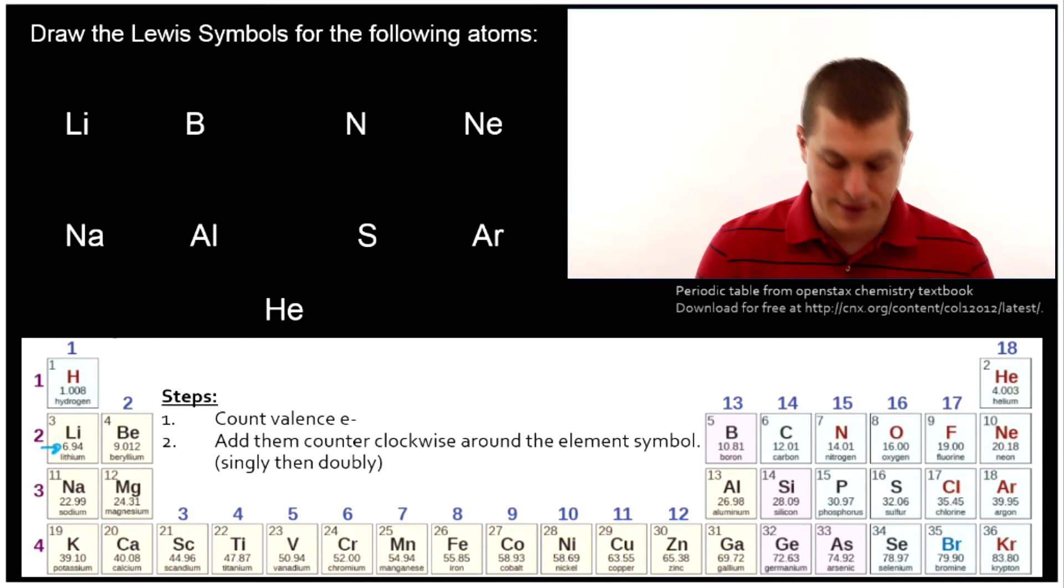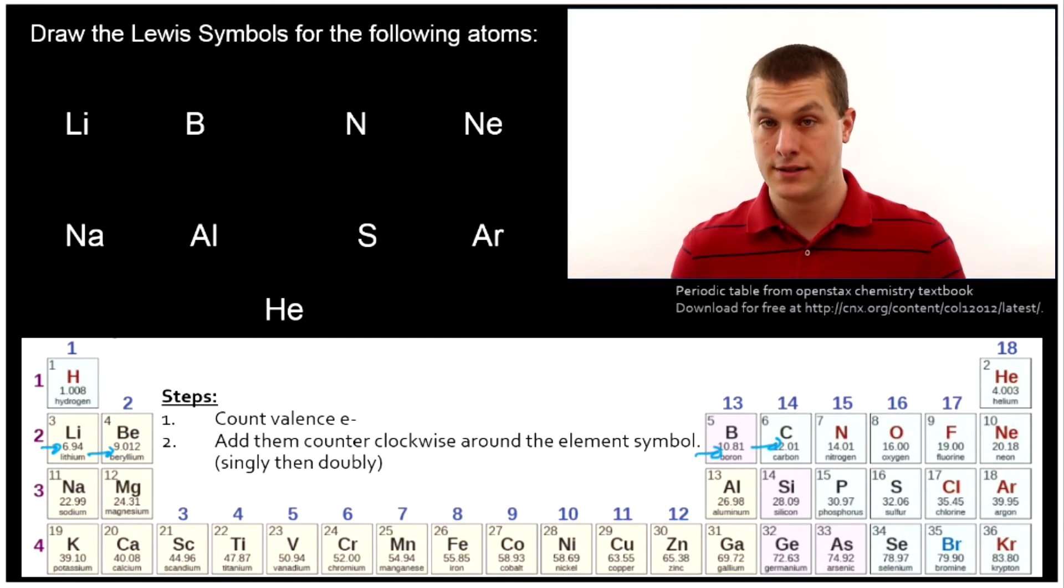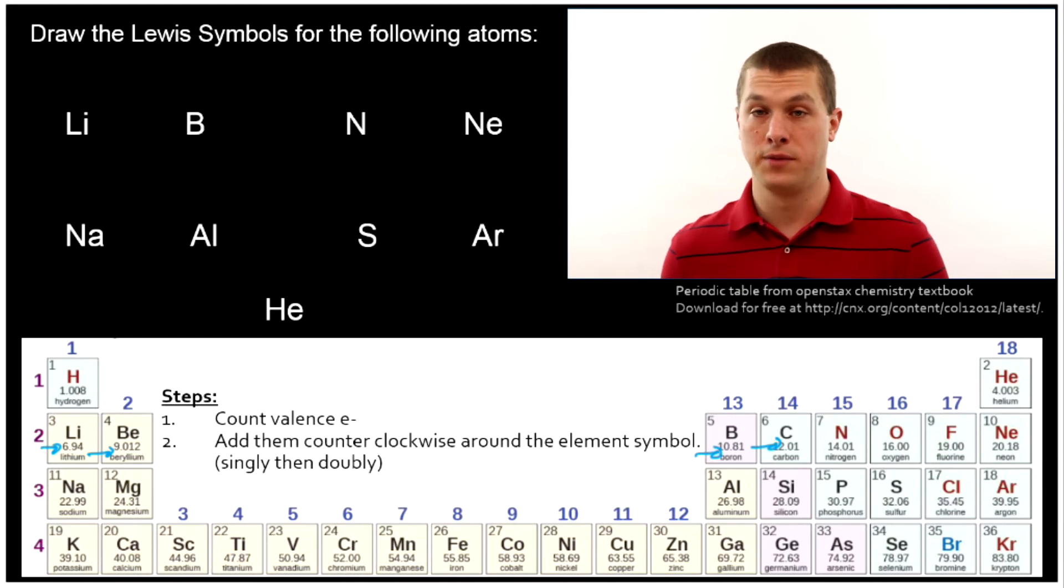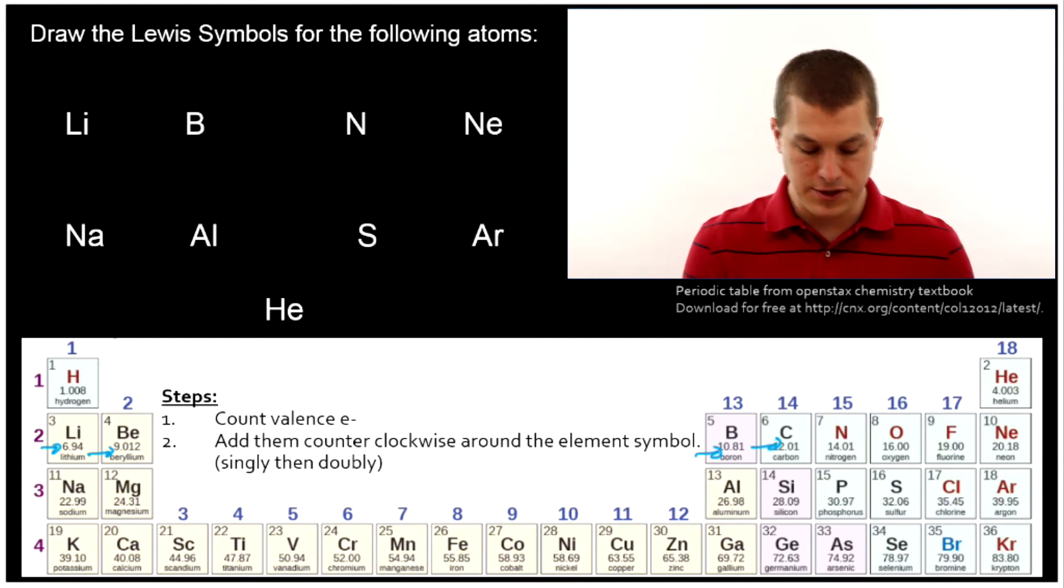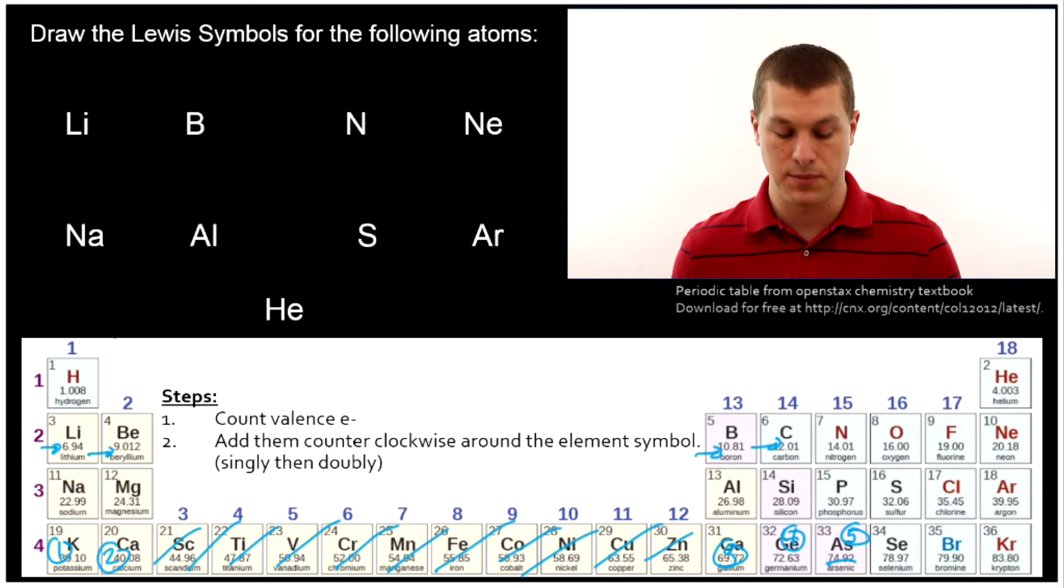So for example lithium is the first box and it has one valence electron. Beryllium is the second box and it has two. Then boron has three. Carbon has four. Nitrogen five. Oxygen six. Fluorine seven. And neon eight. So you just count how many boxes over it is from the left and that's actually equal to its valence electrons. The only exception here is we want to skip the d block when we're down here. So that means if I was looking at say arsenic I would say it has one two three four five valence electrons. I'm skipping that d block and you'd similarly skip the f block. So we can count the valence electrons and then we add them around the symbol.